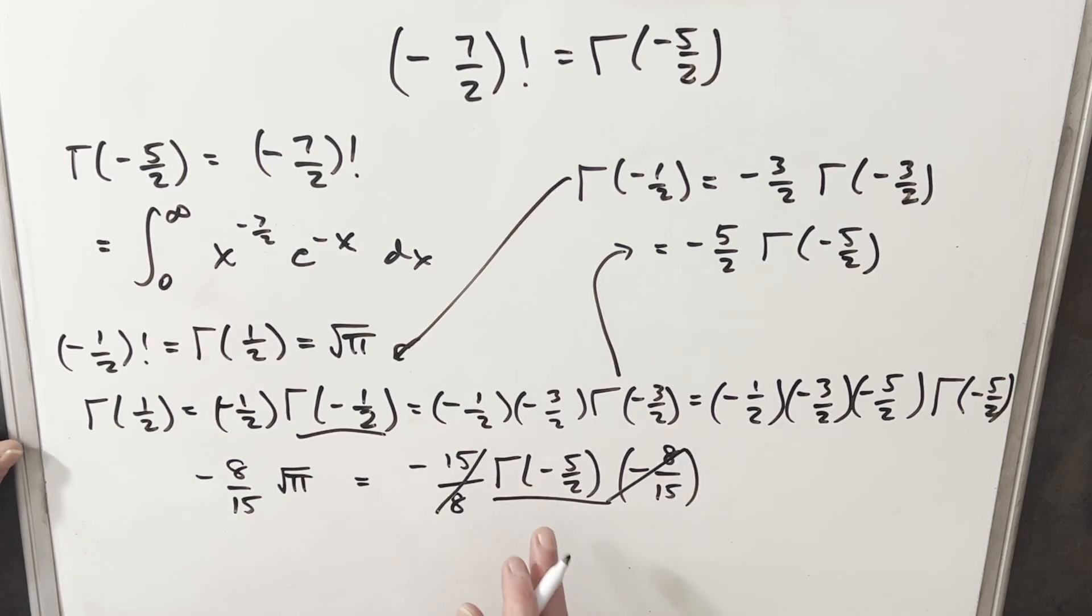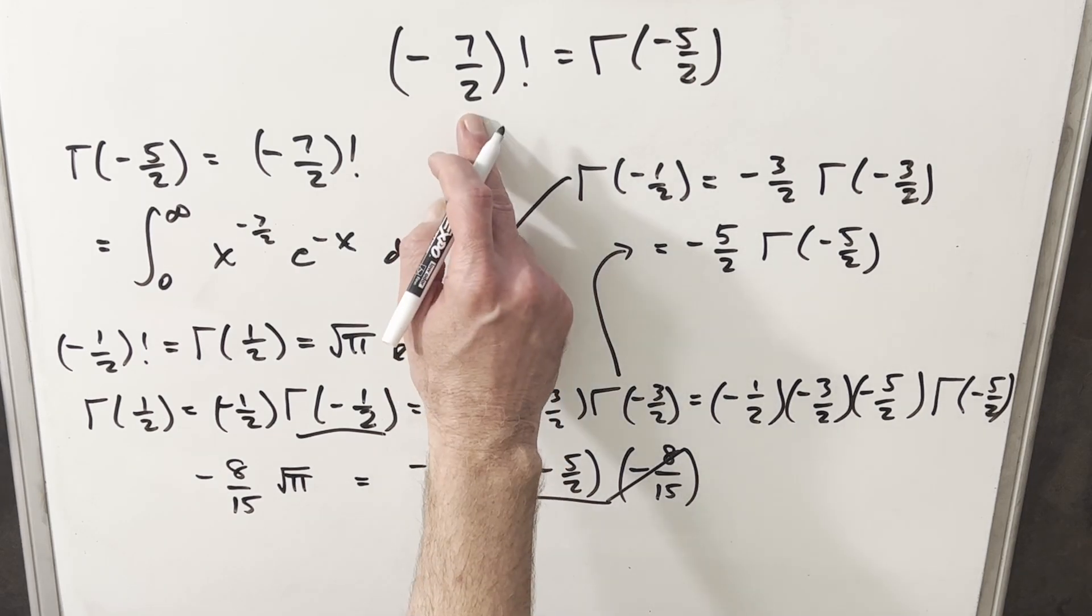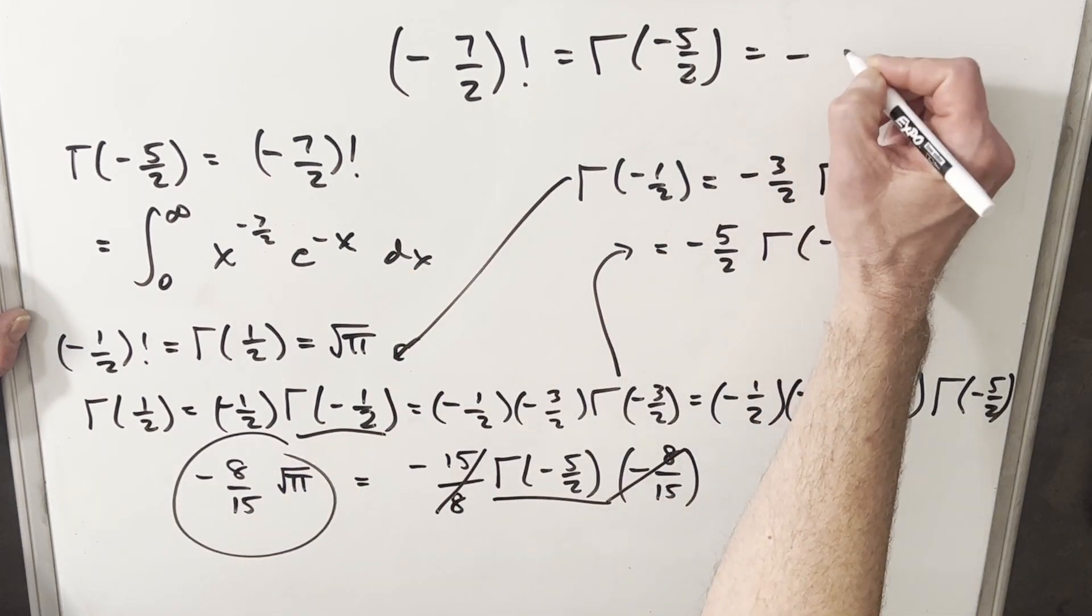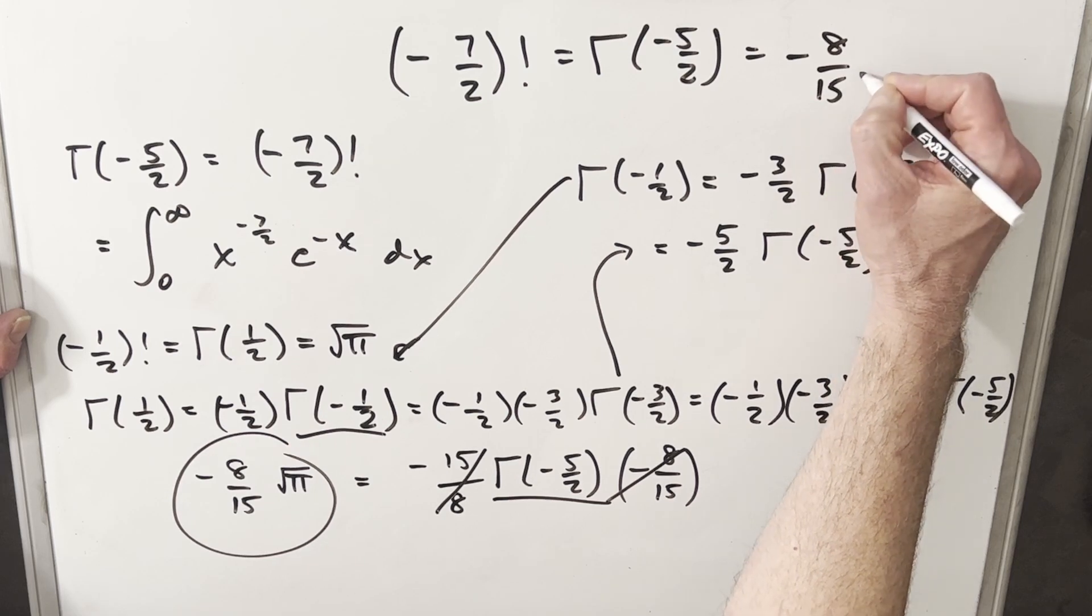And then we notice this cancels and this cancels. So we have this isolated. So our solution for minus seven halves factorial is going to be minus eight over 15 square root of pi.